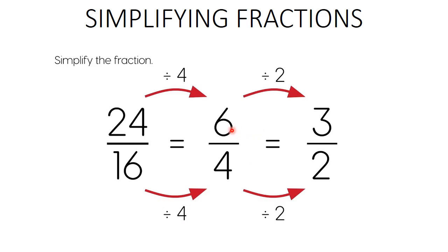But we're not done — 6 over 4 is not the simplest form. We go ahead and divide 6 by 2 to get 3, and divide 4 by 2 to get 2, giving us 3 over 2. Can we simplify 3 over 2 any further? You can divide 2 by 2 with no remainder, but you cannot divide 3 by 2 without a remainder. And you can divide 3 by 3, but you cannot divide 2 by 3 without a remainder. So 3 over 2 is the simplest form of that improper fraction.